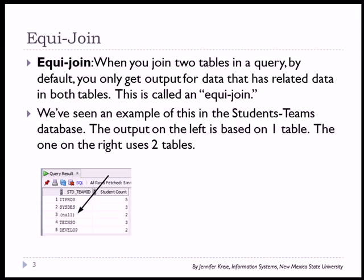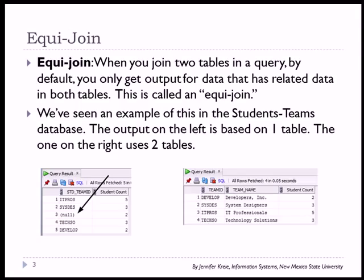We've seen an example of this when we're working with the Student Teams database. In the graphic shown here, the output on the left is based on one table, working with students. The output on the right uses two tables, combining teams with students in order to show team name.